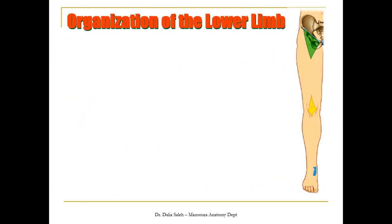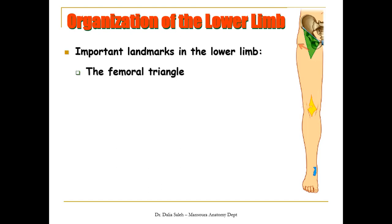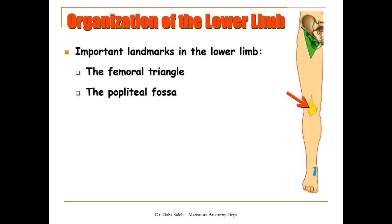In the lower limb you can notice three important landmarks where you can find the neurovascular bundle moving from one region to the other. We have the femoral triangle at the upper anteromedial aspect of the thigh, the popliteal fossa at the back of the knee joint, and the posteromedial aspect of the ankle joint — the area behind the medial malleolus.